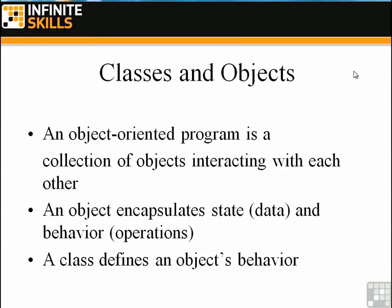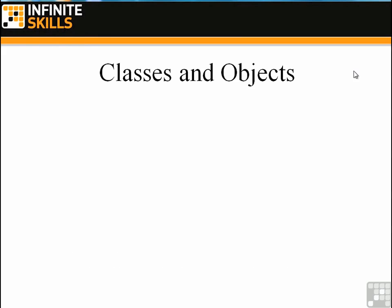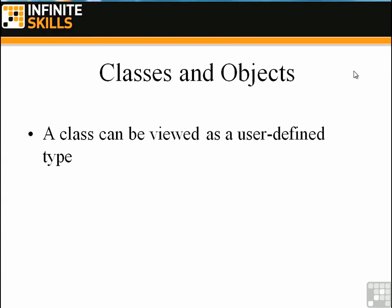A class defines an object's behavior and state. So the class is the definition of an object. A class can be defined or viewed as a user-defined type in a more technical sense. When we create a class, we're creating a type that we can use just like it's a built-in type, like int or Boolean.